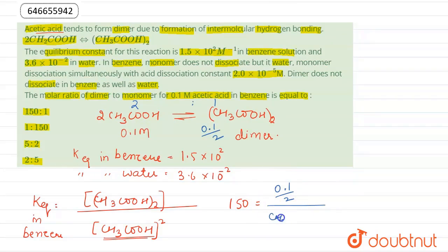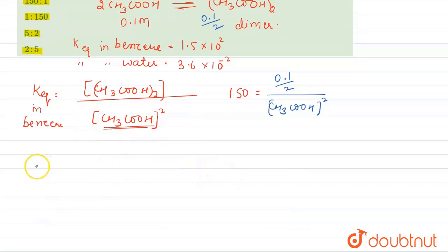The concentration of (CH3COOH)2 is equal to 0.1 divided by 2 multiplied by 150. Or on solving this we get CH3COOH concentration equal to 0.02. This is the concentration of monomer.